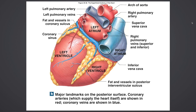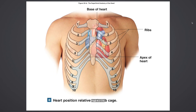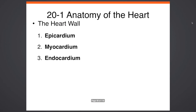This is the heart from the opposite side, so you can now see the right atrium, the right ventricle, the left atrium, and the left ventricle. Notice there is fat around the heart — too much fat around the heart is not a good thing. This is the location of the heart between the chest plates — study this.